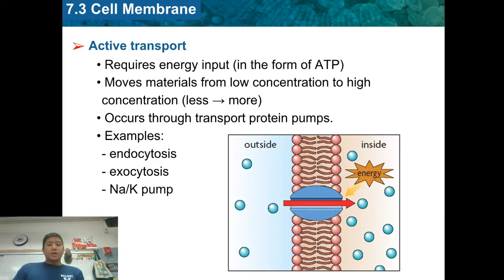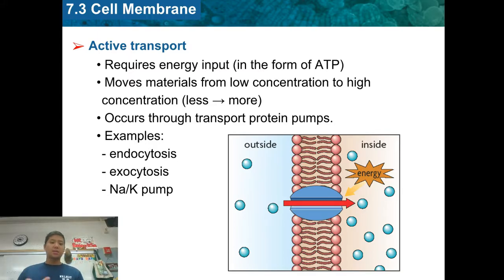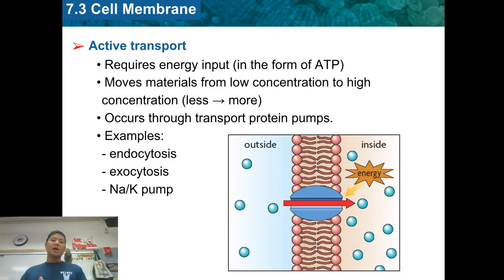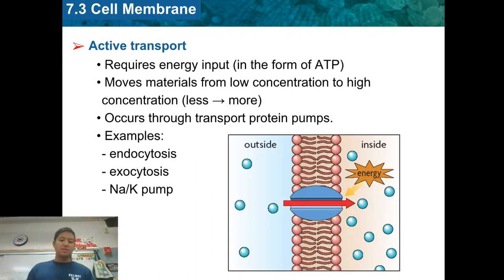Those were examples of passive transport. Now let's talk about active transport. Active transport requires energy, and it moves things from low to high concentration. Passive transport was high to low and required no energy. Active transport goes from low to high, and to do that, we require energy in the form of ATP — the energy of the cell.